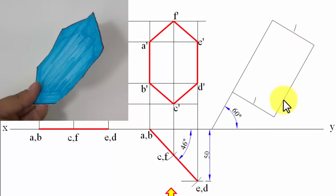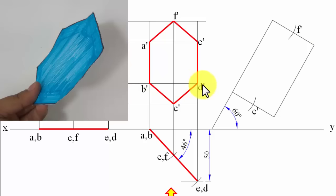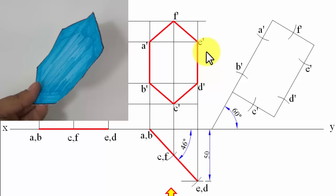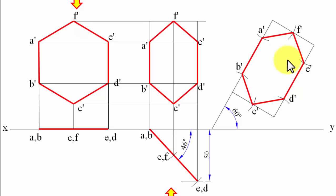Using the compass, locate B′ and E′ by swinging arcs with the same radii, placing one arc here and another there. Similarly work out A′ and D′. Join all the points in sequence to recreate the hexagon inclined at 60 degrees.